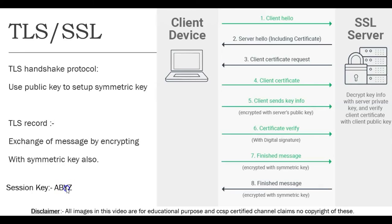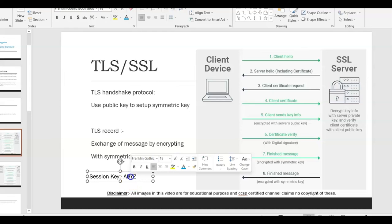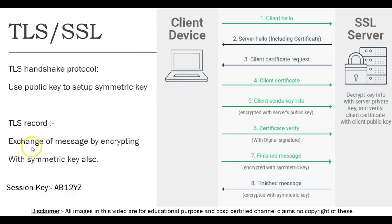The session key — let's say it is AB12YZ — is used to send messages from client to server and server to client. This encryption via the session key is called the record. So when asked what the record step is, this is it: all post-handshake communication encrypted with the session key.